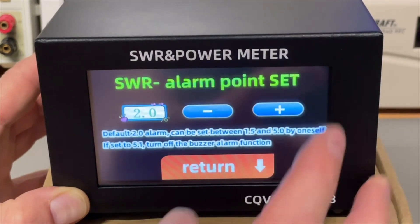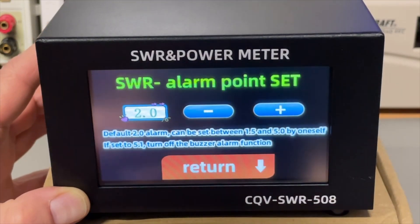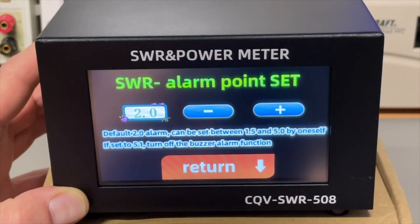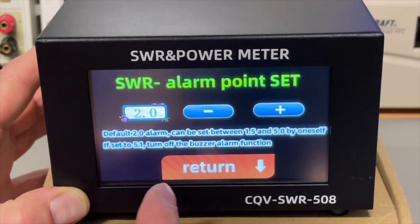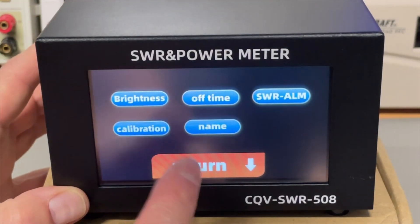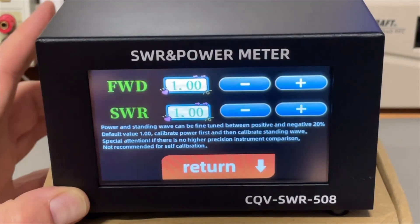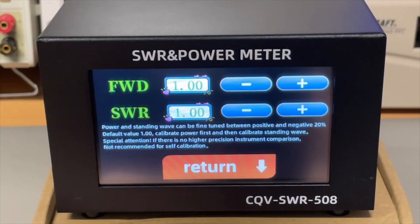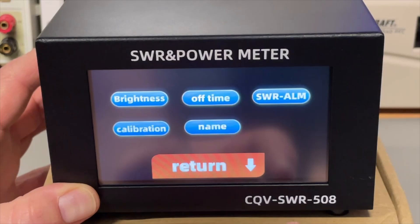We have an SWR alarm. It is now set at 2.0. I think you can do it all the way up to 5. And if you switch it to 5.1, you are actually disabling the alarm. But the 2.0 is good enough. It is already calibrated. But you can calibrate. I think 10% up and 10% or 20% up and 20% down even. But as I said it is already calibrated. So it should be. We have a look at that.